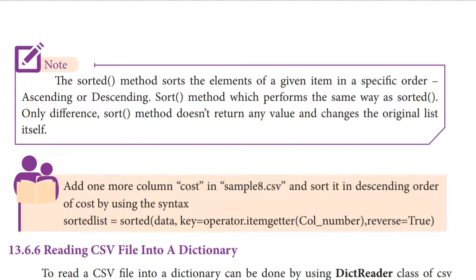Add one more column — cost — in sample8.csv and sort it in descending order of cost using the syntax: sorted_list = sorted(data, key=operator.itemgetter(column_number), reverse=True). This is the coding to add a new column and at the same time arrange the values in descending order. That's all, children. Thank you.